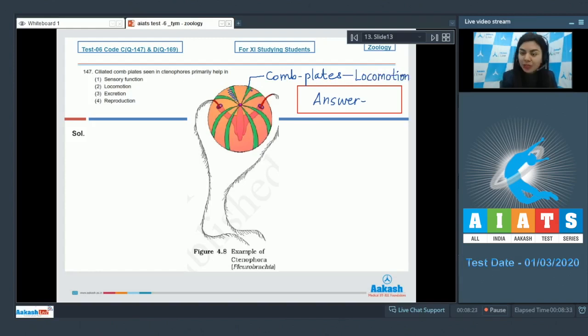These comb plates help in locomotion. When these cilia beat together in a synchronized fashion, it helps the ctenophore to move from one place to another. Because the body is 99% water, it gives it a jelly-like appearance with these comb plates on them. The right answer here would be option number two, locomotion. Whereas option number one, sensory function, excretion, and reproduction, these systems are absent in ctenophores. My right answer here is option number two, locomotion.